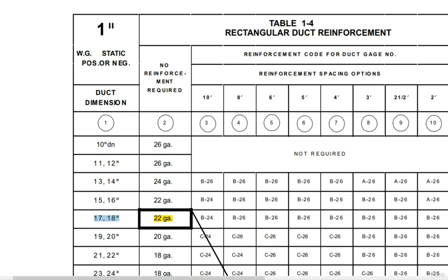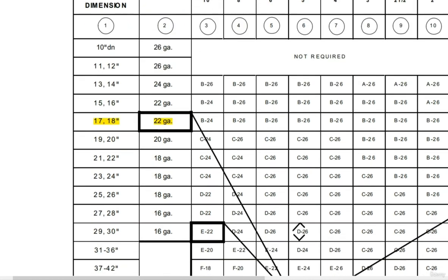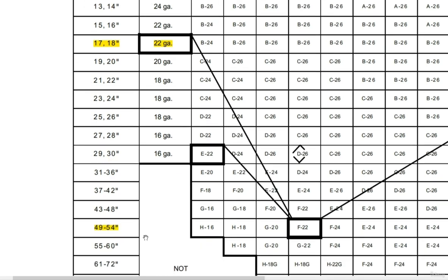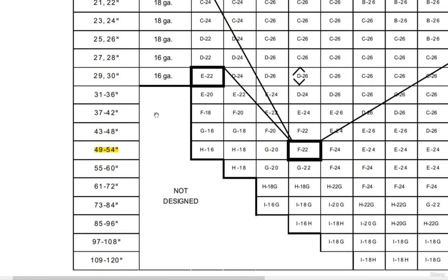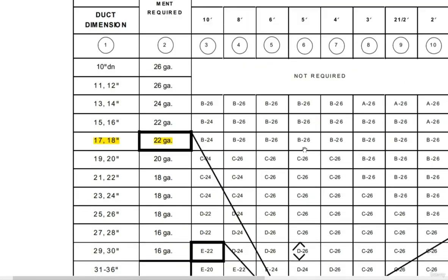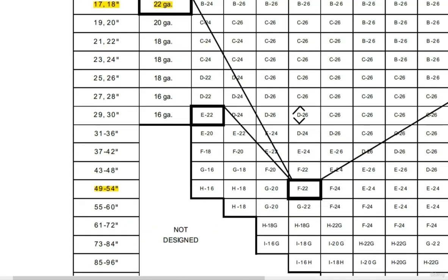For the 18-inch side I will use gauge 22 duct without reinforcement. However, for the second dimension — the width, or 54-inch duct — which falls between 49 to 54 inches, there is no value given for the duct sheet metal thickness in that slot. It is marked as 'not designed,' which means reinforcement must be installed. So I intersect that row with the column for 5-foot joint spacing, and this gives me the value F22. F22 indicates that I need to use a duct gauge of 22 with the F-type reinforcement.